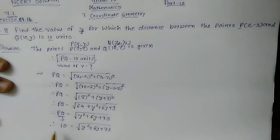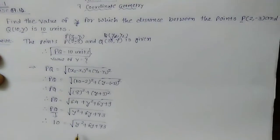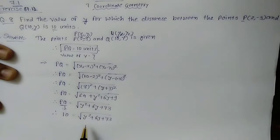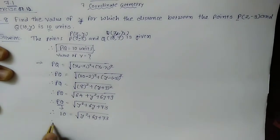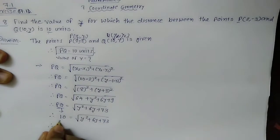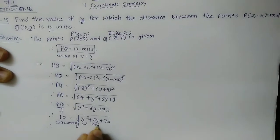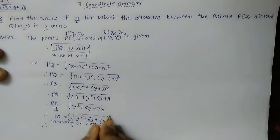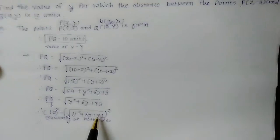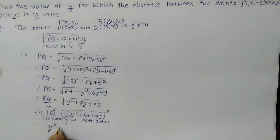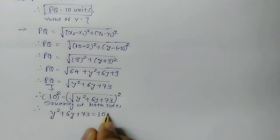We have put the given value of PQ. Now we need to find the value of Y. For that, I will do squaring at both sides. Squaring both sides, the square root and square cancel, giving Y² + 6Y + 73 = 10² = 100.